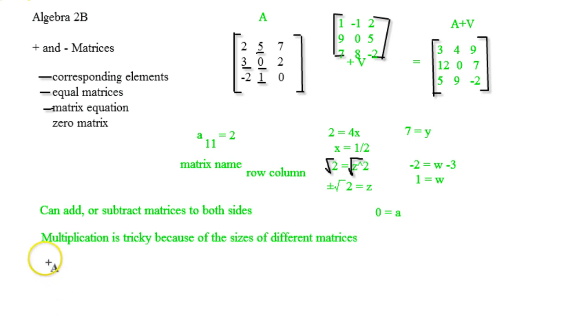Because multiplication is tricky because of the sizes of different matrices. You have to be very careful. And division does not exist.